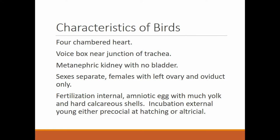The sexes are separate, so there are males and females. Females have a left ovary and oviduct only — instead of two ovaries, just one. Fertilization in birds is internal. The amniotic egg contains a lot of yolk — the big yellow part — which is where the developing embryo gets its energy for growth and development while inside the egg.